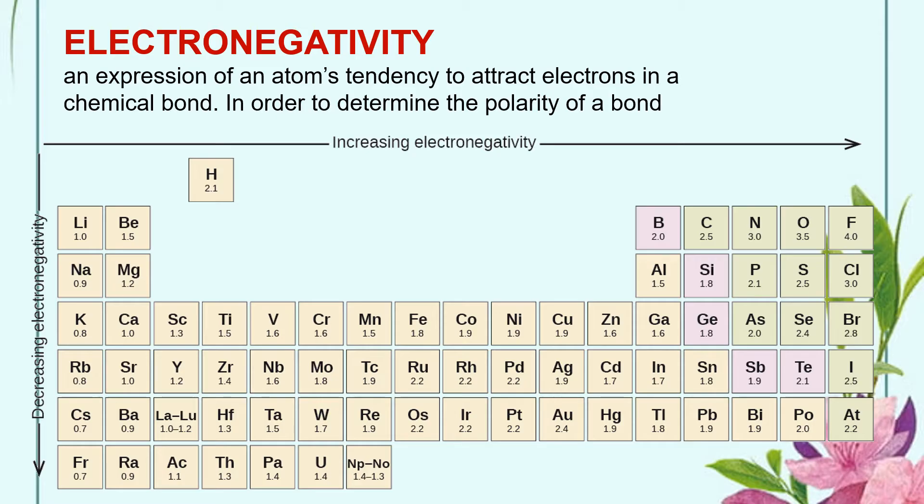We could use the electronegativity values of the atoms involved to get the absolute electronegativity difference, which will help us in predicting what type of chemical bond whether ionic, polar covalent, or non-polar covalent would exist between them.